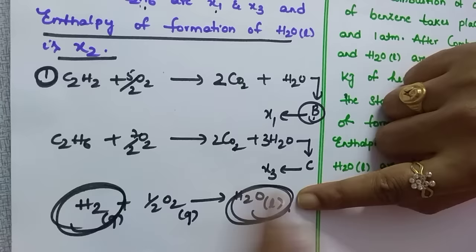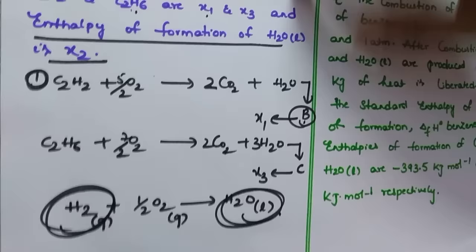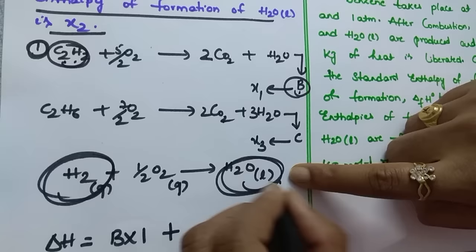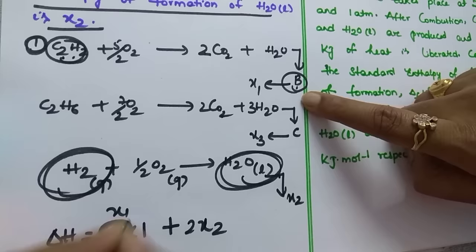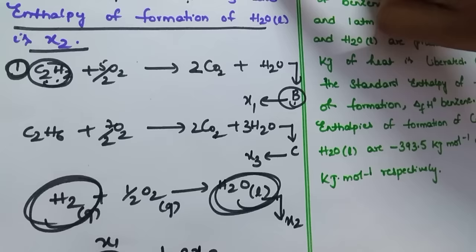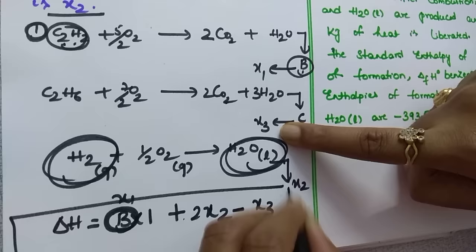Now write the delta H expression: C₂H₂ appears in reactant side of expression B (one mole), so take 1×x₁. H₂ appears twice in reactants, and each H₂ combustion gives x₂, so add 2×x₂. C₂H₆ is in the product side, so subtract x₃. Final answer: ΔH = x₁ + 2x₂ − x₃.